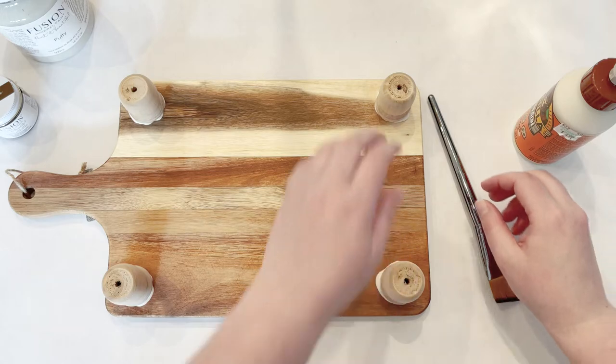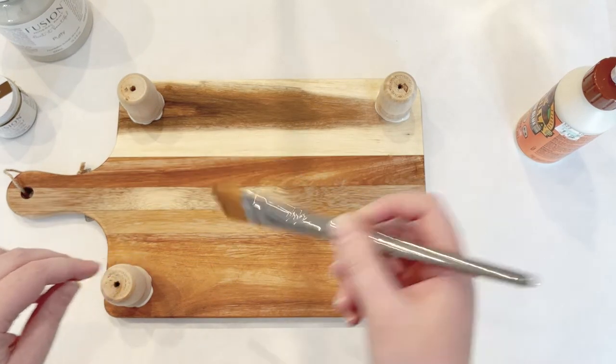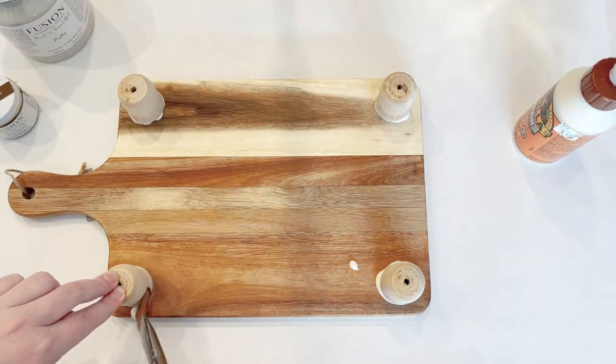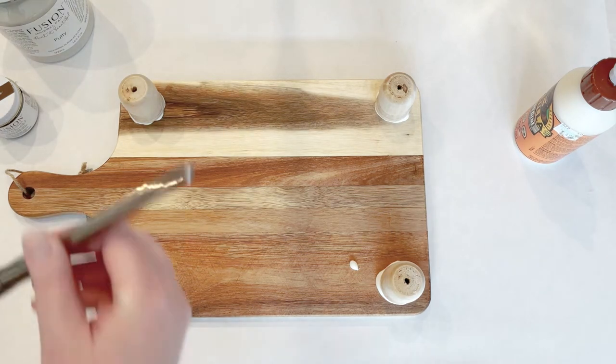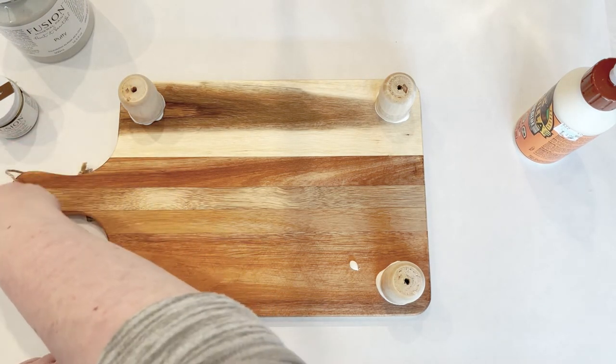To kind of clean it up and make sure that I have wood glue all around the base, I'm just going to use a paintbrush and wipe around the candle holders to take off the excess glue.